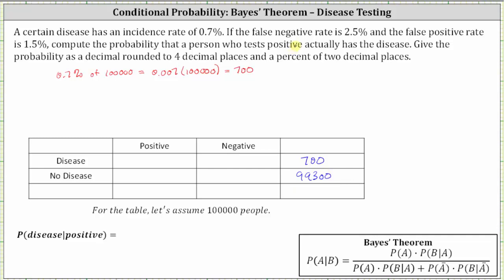Next, the false negative rate is 2.5%. False negative means the person tests negative but actually has the disease. Therefore, the next step is to find 2.5% of the 700 people that have the disease. So 2.5% of 700 is equal to 0.025 times 700, which is equal to 17.5.